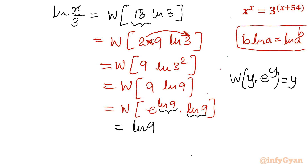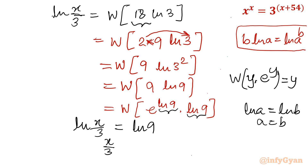The left-hand side is ln(x/3). Comparing both sides: ln(x/3) = ln9, so since ln(a) = ln(b) implies a = b, we get x/3 = 9, and therefore x = 27.